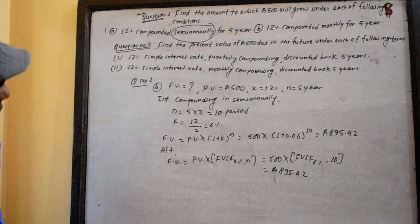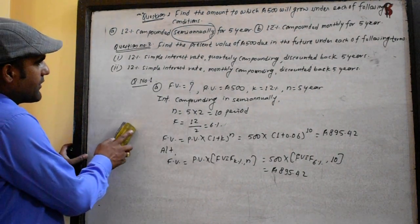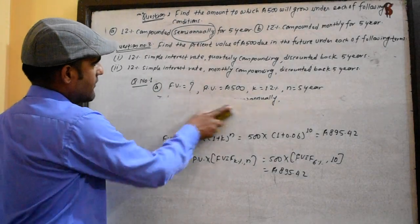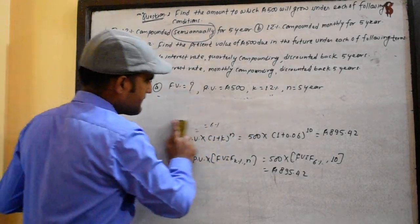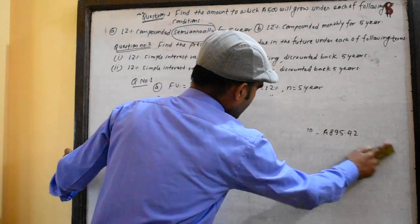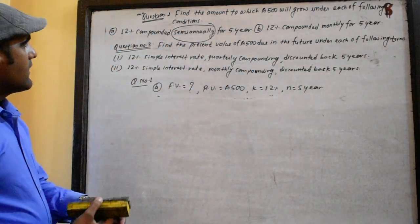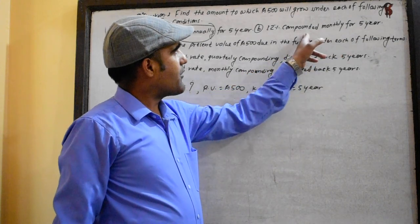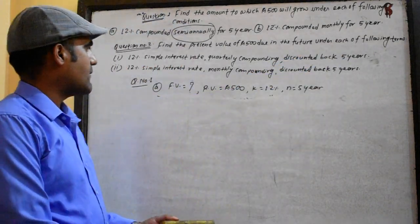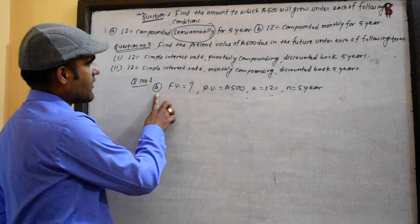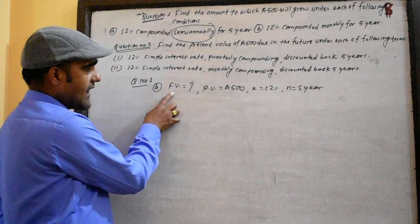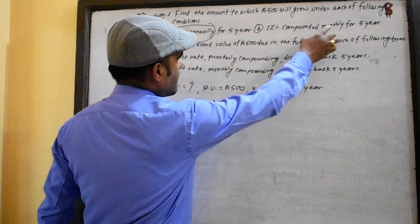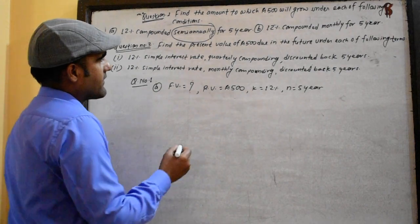Now for Case 2, compounding is monthly — 12 times per year. The number of periods n is 5 times 12, giving 60. The interest rate per period k is 12 divided by 12, which equals 1%.